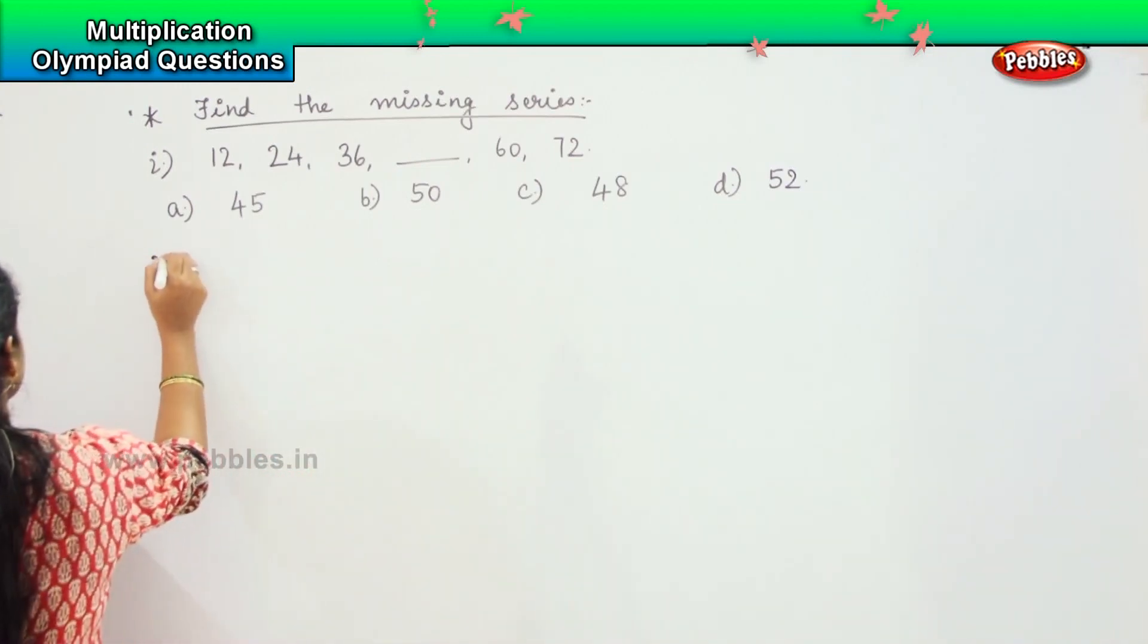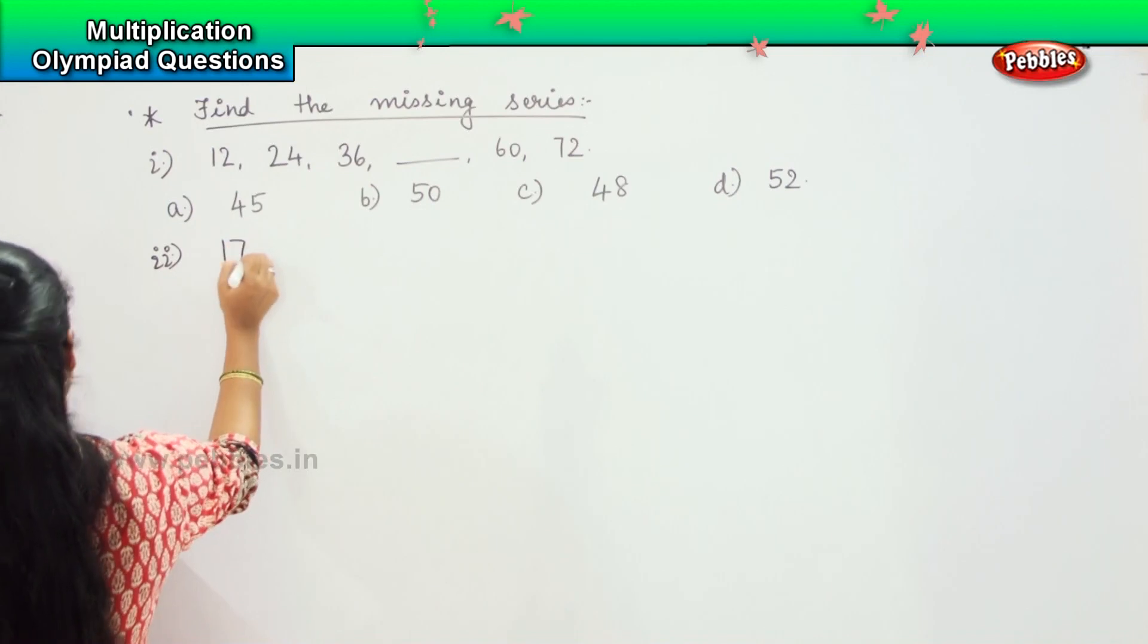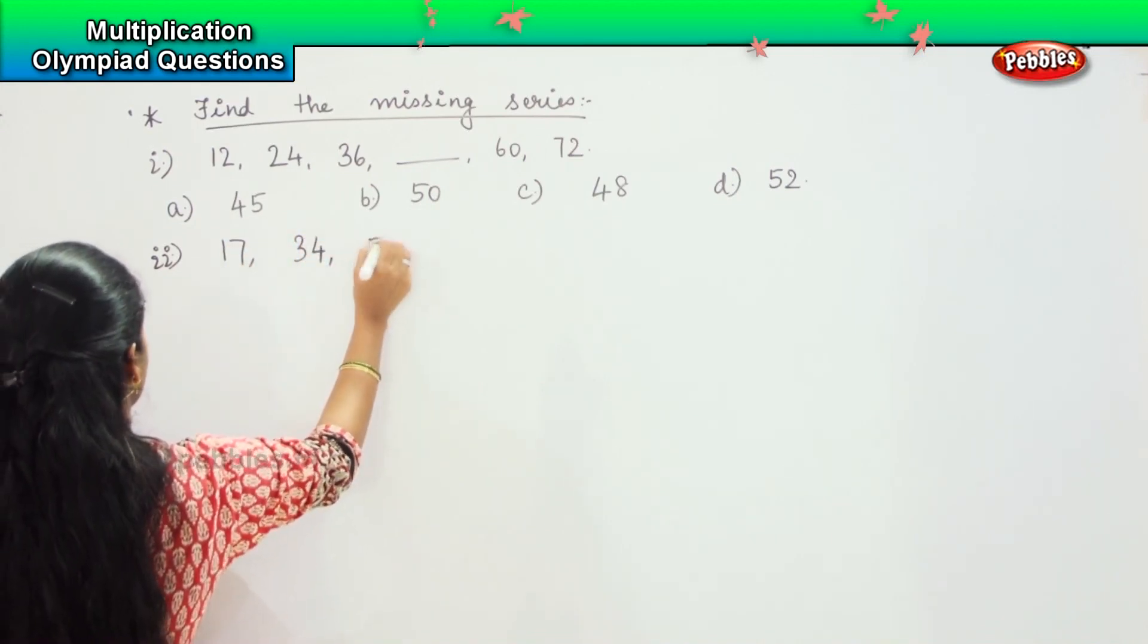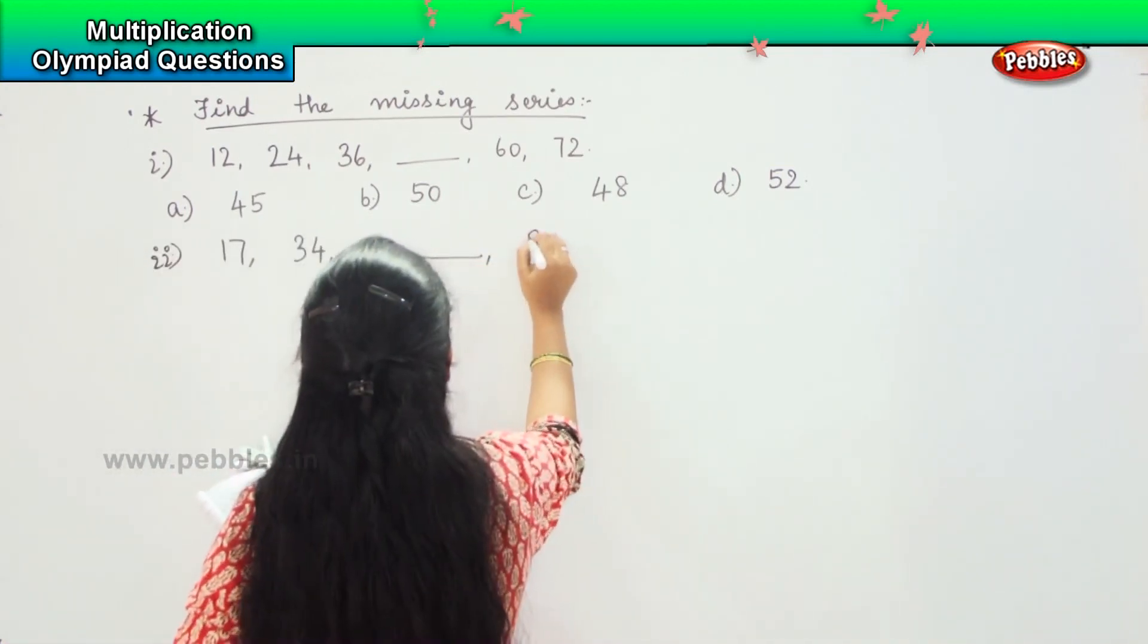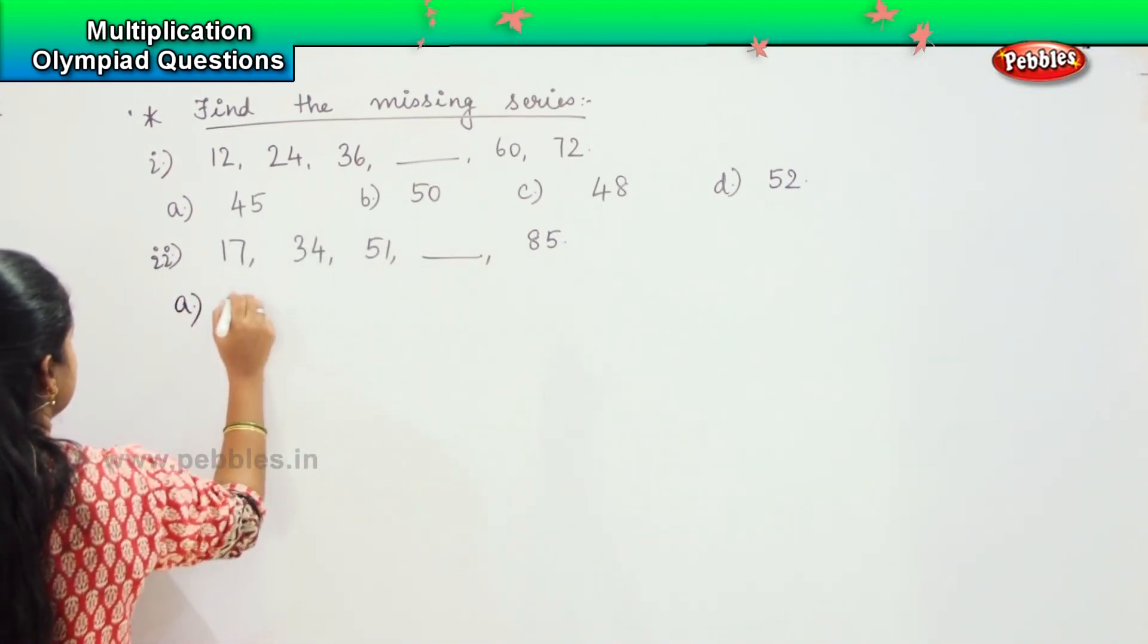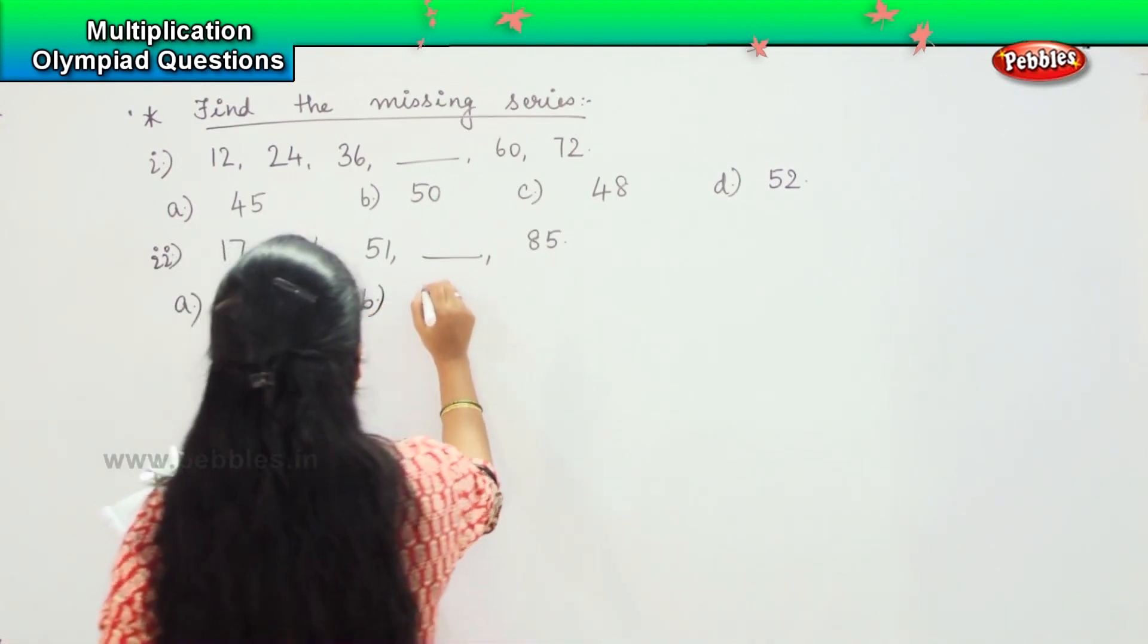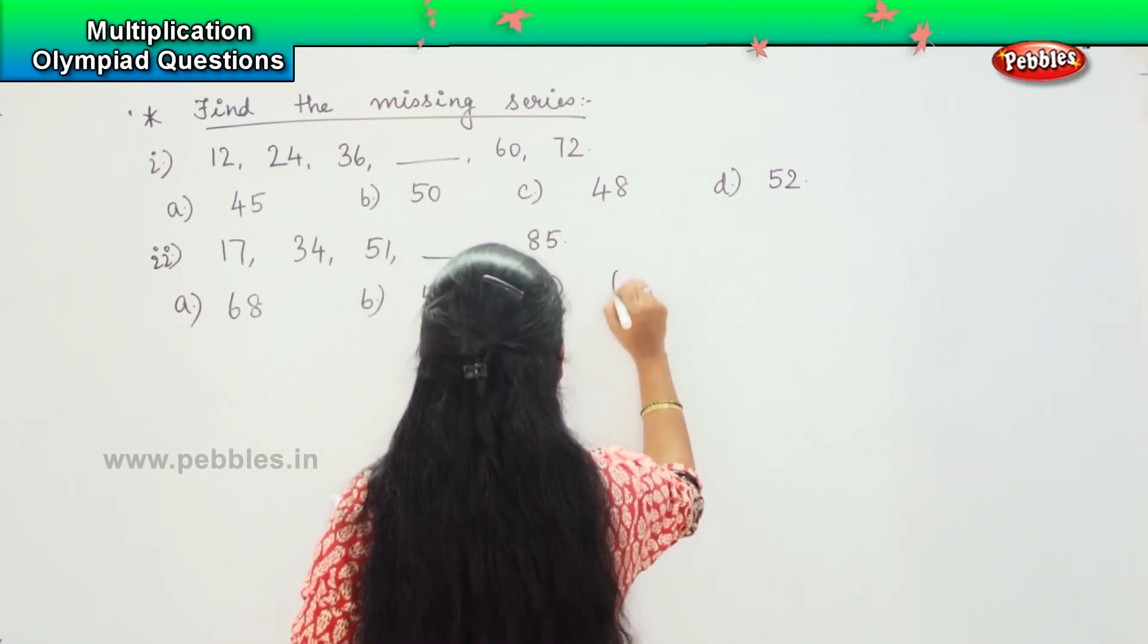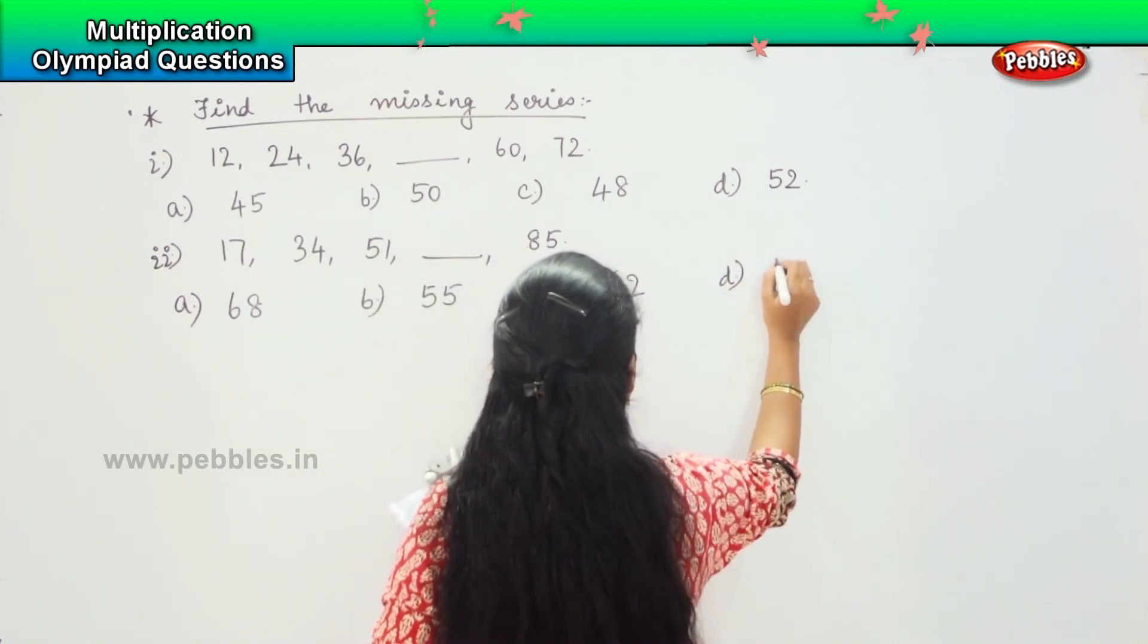Your second question states 17, 34, 51, dash, 85. Your options are A: 68, B: 55, C: 62, and D: 65.